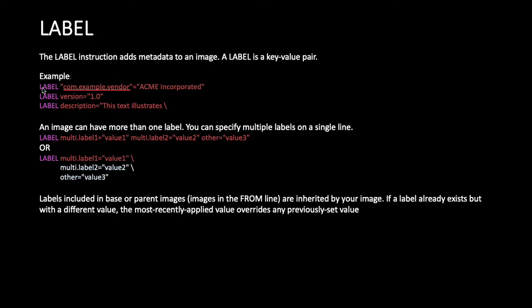In the example, the LABEL instruction is mentioned with key 'version' and value '1.0'. You can keep both key and value in inverted commas, or just the value, or carry the value to the next line using a forward slash. You can also define multiple metadata values in a single LABEL instruction on multiple lines using forward slash.